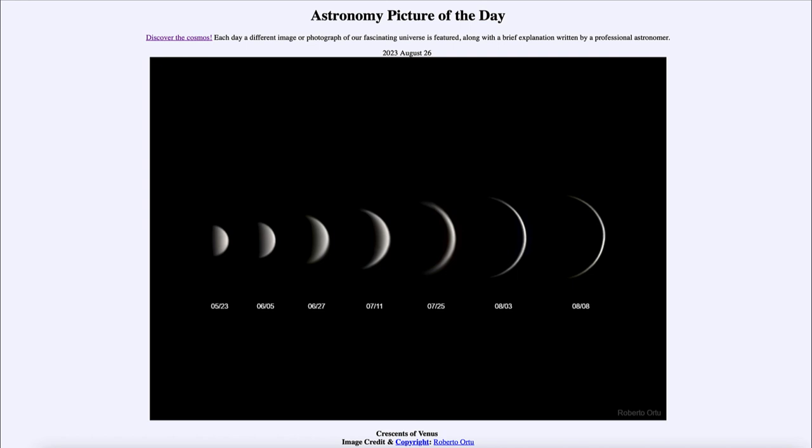We also notice that Venus changes in size. We see a small quarter phase on the left and a very large crescent phase on the right. That changes because Venus is getting closer to Earth. When it's a quarter phase it's further away, and when it's a crescent phase it's close to in between Earth and our sun, and that makes it appear a little bit larger.